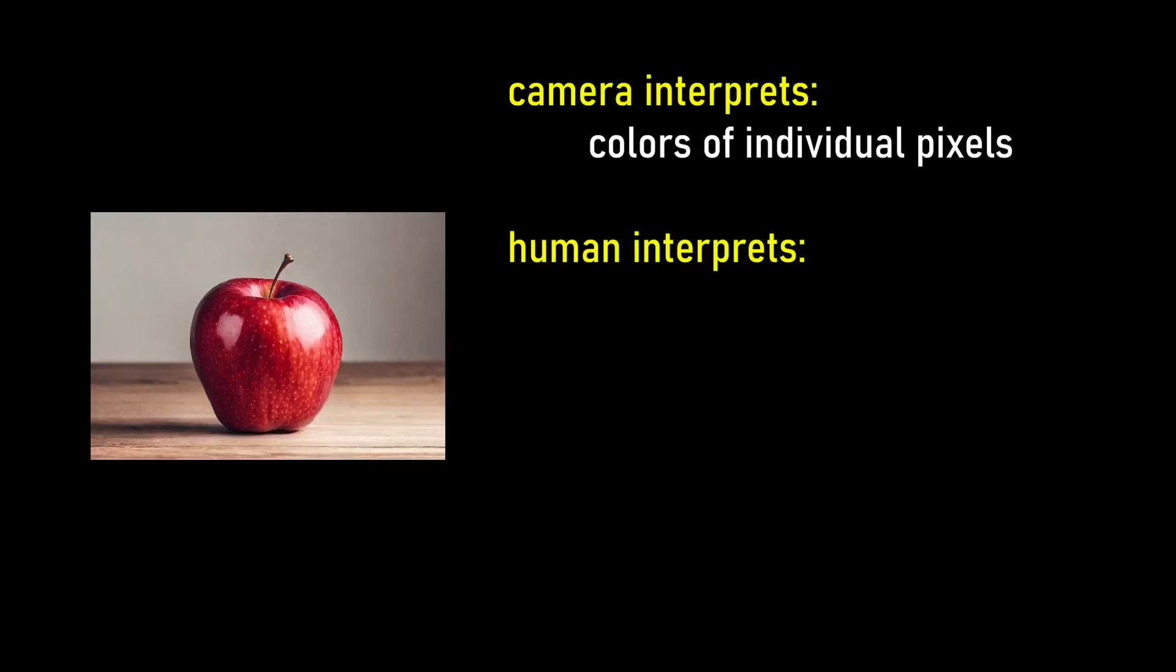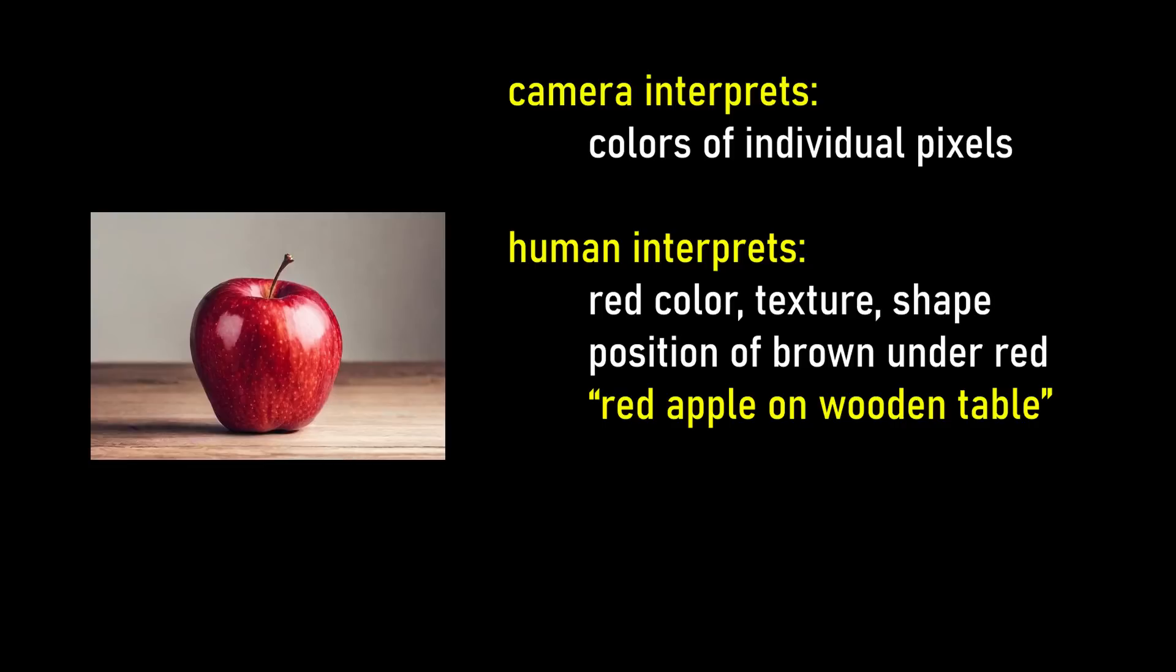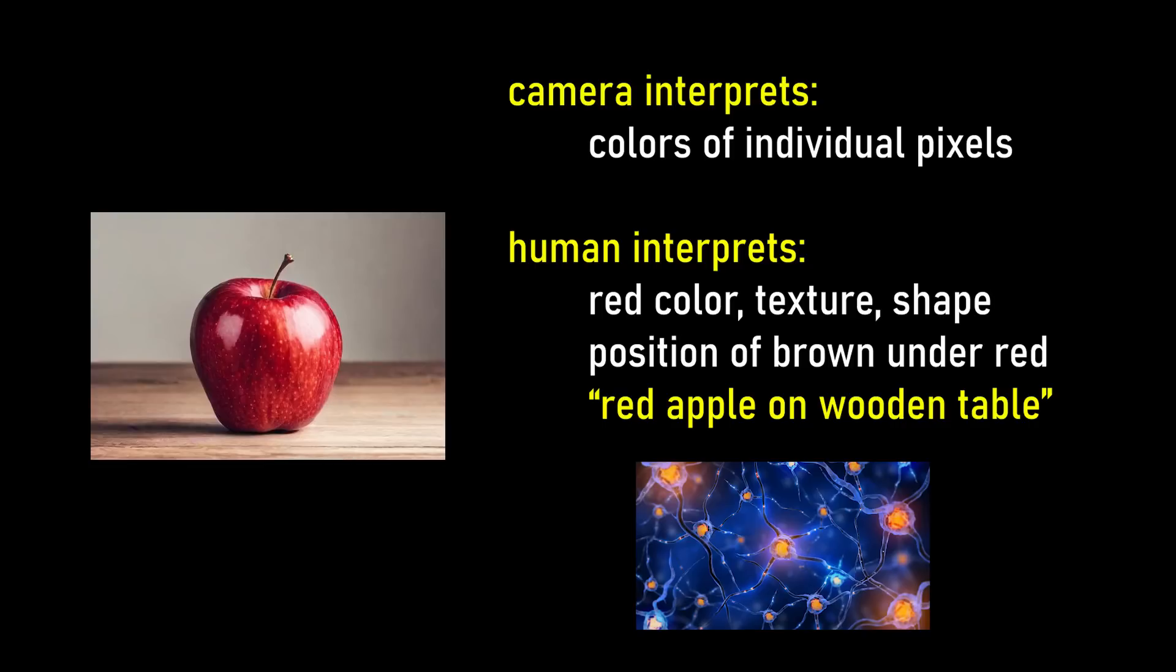So, for example, if there's a red apple on a wooden table, when a camera takes a picture of it, it stores information of all the individual pixels, which do not influence each other through causality. In contrast, when a human sees that scene, we are able to take all the information we gather of the color red, the texture, the shape, the relative position of everything, with the brown underneath the red, and integrate all that information to perceive that, oh, it's a red apple on a wooden table through the causality between neurons in our brains. Hence, a human is conscious, while a camera is not.